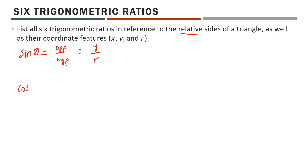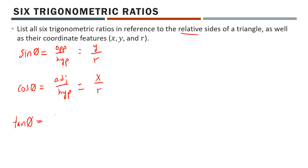Cosine theta is adjacent over hypotenuse. In terms of coordinate features, your adjacent side is your x, so we have x over r. For tan theta, tan is opposite over adjacent. Opposite is y and adjacent is x, giving us y over x.